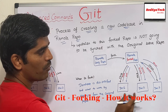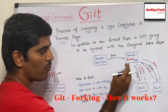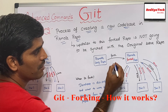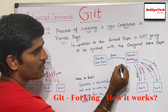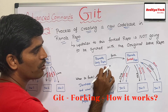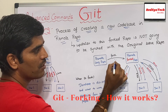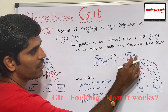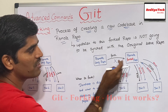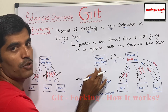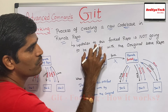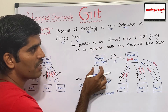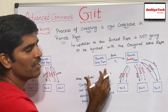Developer 1, 2, and 3 can clone the forked repository and do push and pull just the same. But the connection between the forked repository and the original remote repository will be blocked — meaning any changes happening in the forked repository are not going to be synced back to the original repository.